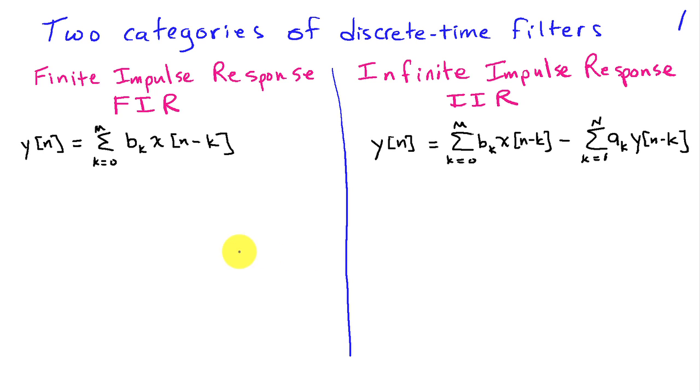In an FIR filter, we express the output at time n, y of n, simply as a sum of weighted values of the past input. This is also sometimes known as a moving average.